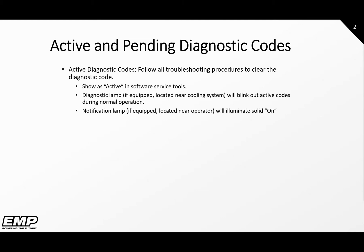There may also be a notification lamp near the operator. If this is installed, the lamp will illuminate solid on after the active code has been active for a predetermined set of time. This will alert the operator to notify service to inspect the system.